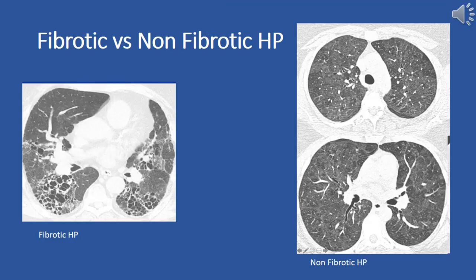Fibrotic hypersensitivity pneumonitis is characterized by the development of fibrosis, or scarring, in the lung tissue due to chronic exposure to allergens. This fibrosis can lead to a progressive decline in lung function and may require medical intervention such as oxygen therapy or lung transplantation.